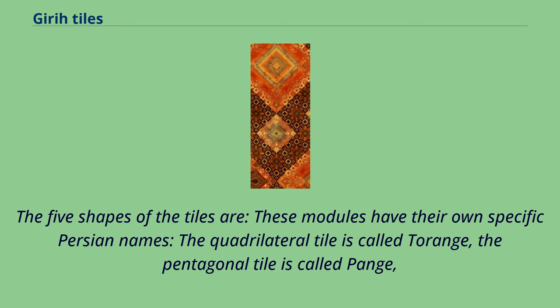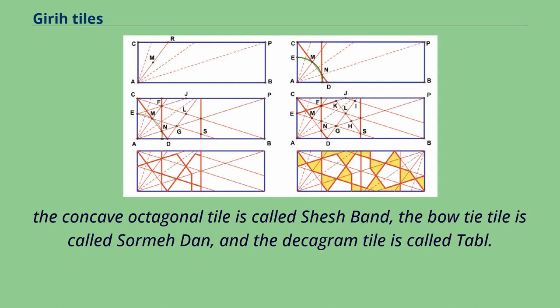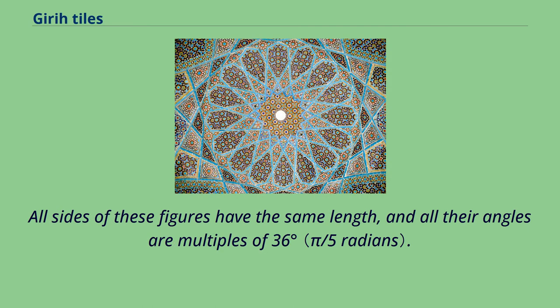The five shapes of the tiles have specific Persian names: the quadrilateral tile is called taranj, the pentagonal tile is called pongay, the concave octagonal tile is called sheshband, the bow tie tile is called sormadan, and the decagram tile is called table. All sides of these figures have the same length and all their angles are multiples of 36 degrees.